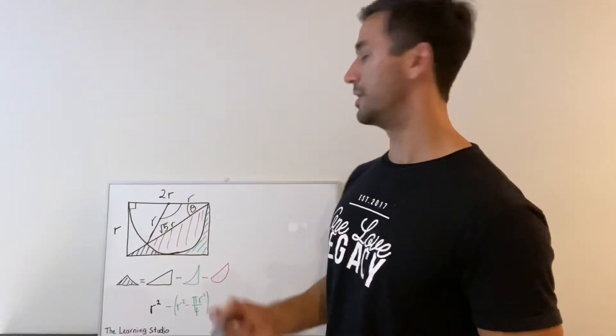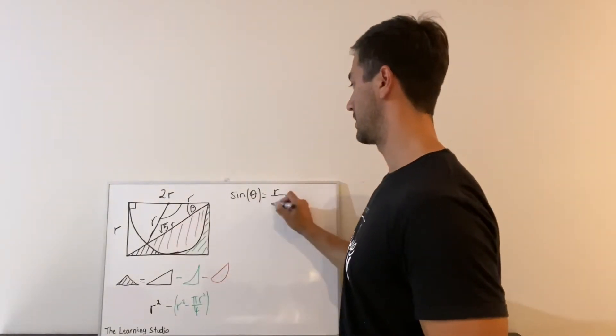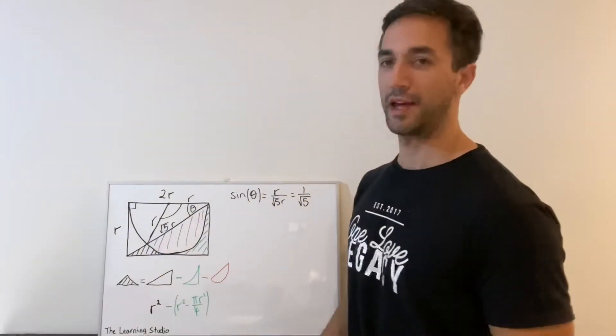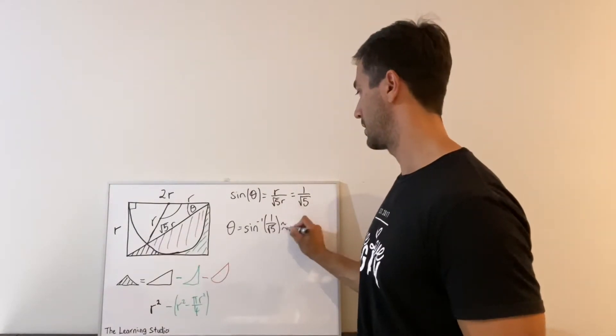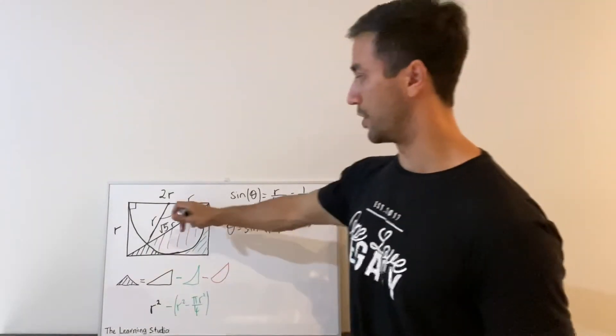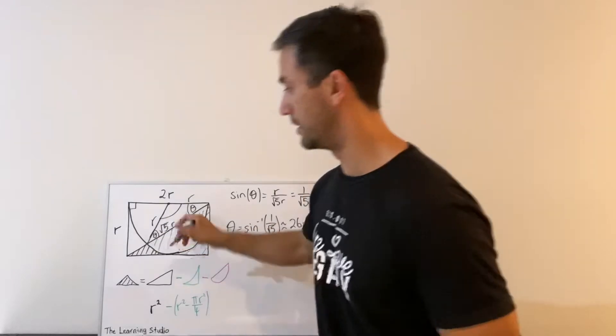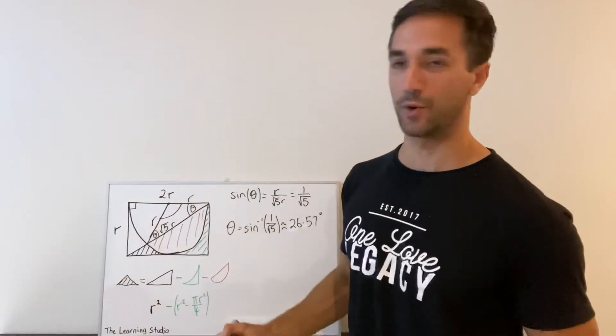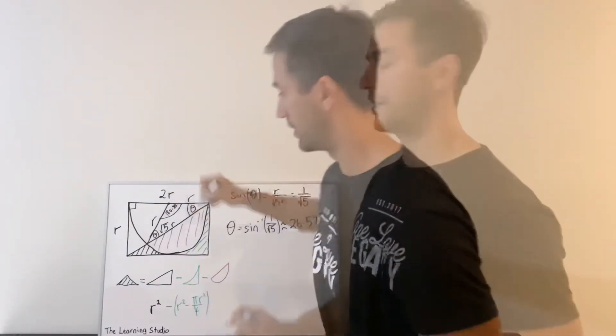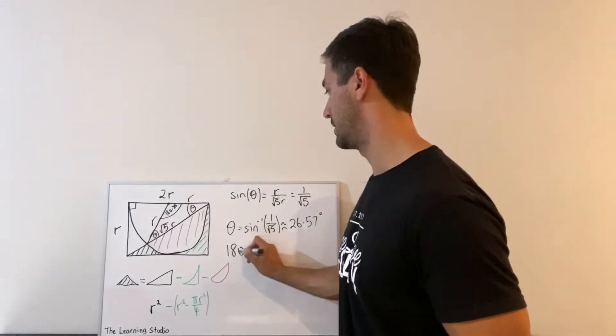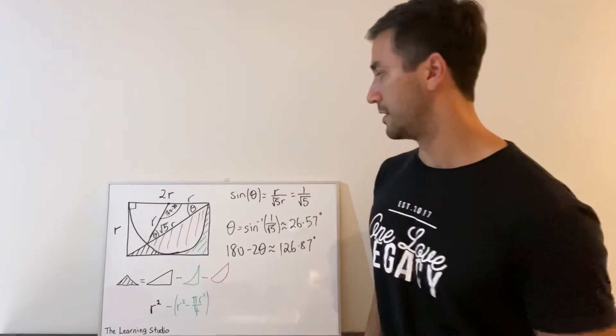Okay, and so now that tells us that sine of theta. And so if we use our calculator, we can work out theta. Now we can work out this angle, okay? So because this was an isosceles triangle, this angle is also theta. And all three of these angles have to add up to 180 degrees. So this is 180 minus 2 theta. And so 180 minus 2 theta is approximately this angle here.